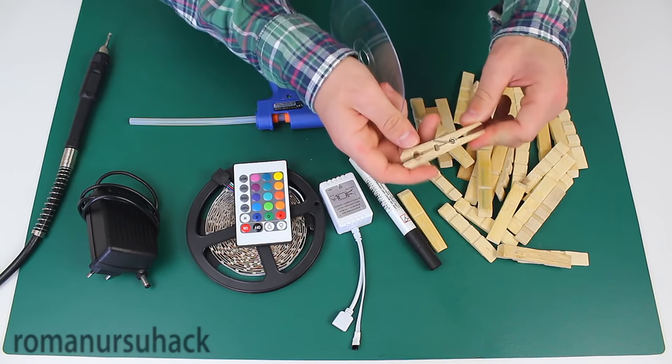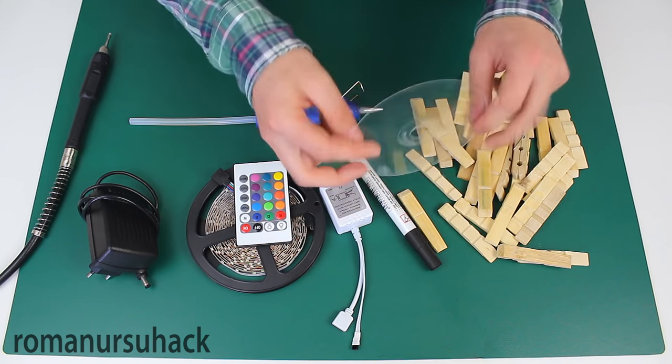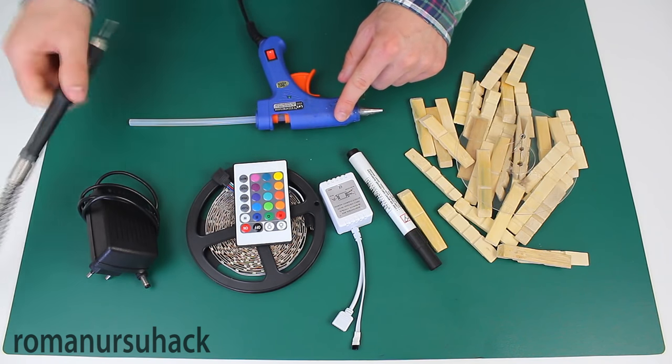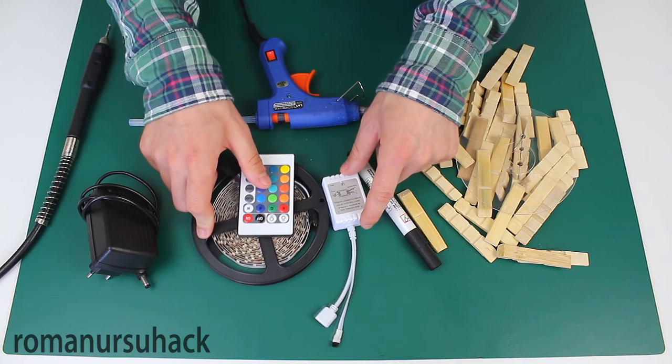Well guys, in order to make our star night lamp we'll need some wooden pins, one CD or its plastic base, of course a glue gun, a drill or a borer, and also we need a small fluorescent lamp.